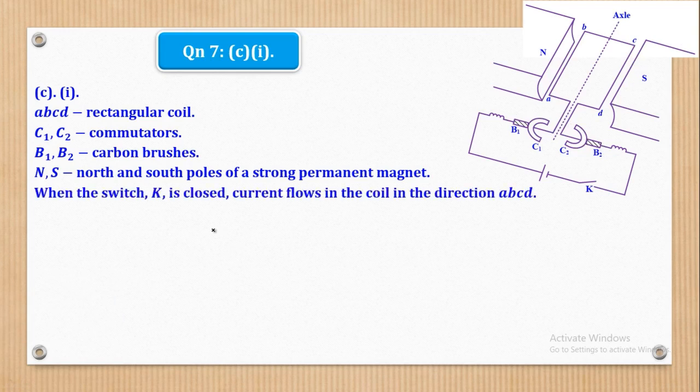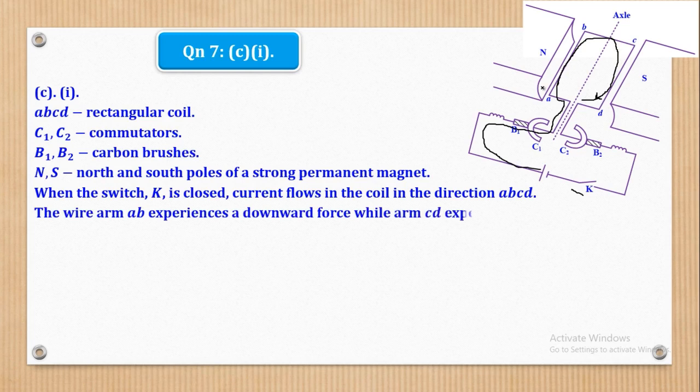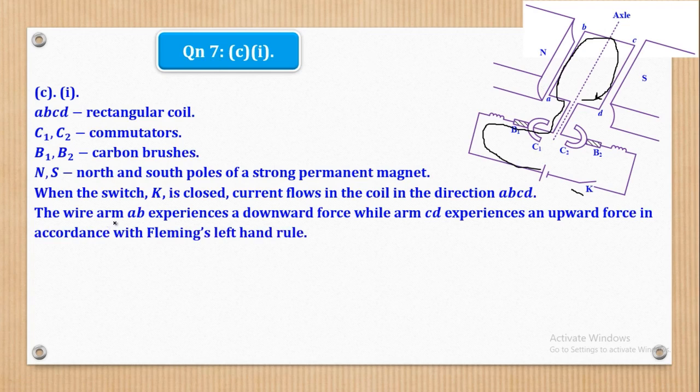So now we shall go to the action of a DC motor. We shall say, when the switch K is closed, current flows in the coil in the direction A, B, C, D. So when you close this switch K, current will flow in this direction like this. Say that it goes through the coil in the direction A, B, C, D in that form. So when does social come and say that the wire arm A, B, experiences a downward force while arm C, D experiences an upward force in accordance to Fleming's left hand rule.